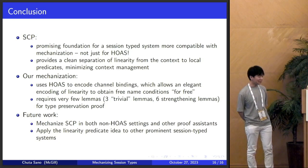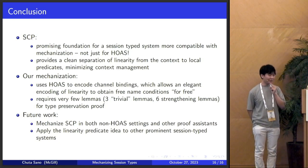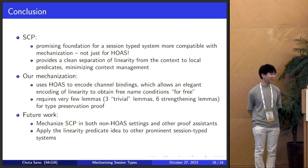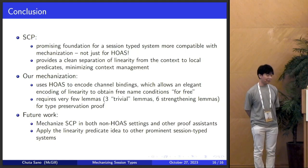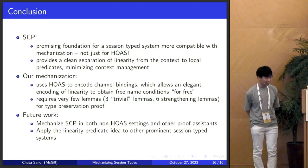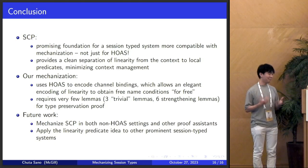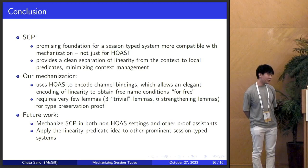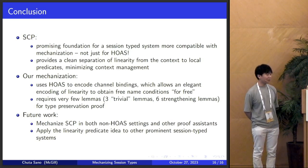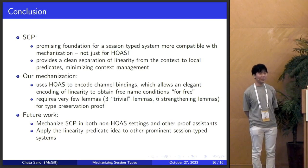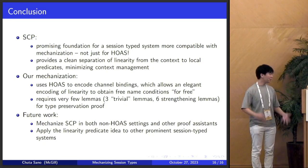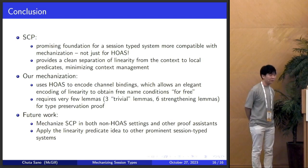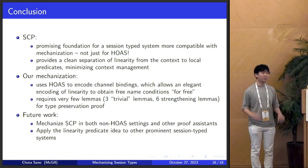There are two interesting avenues for future work. One is to mechanize SCP in non-HOAS settings and other proof assistants, to see the trade-offs between this additional linearity predicate and not having to deal with linear contexts. Also, there are lots of baseline process calculus session-type systems people develop from — not just CP, but things like GV or SIL — and it would be nice to see how this linearity predicate idea works for those other systems as well.